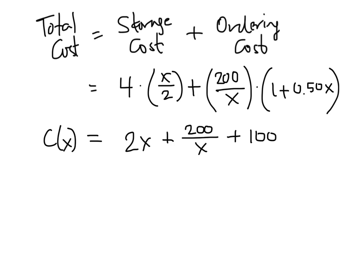Well, as always, if we want to minimize the function, we take its derivative and look for critical values. So in this case, the derivative, c prime, is going to be 2. Now 200 over x, we think of that as 200 times x to the minus 1, so we get negative 200 times x to the minus 2, and the derivative of 100 is 0.